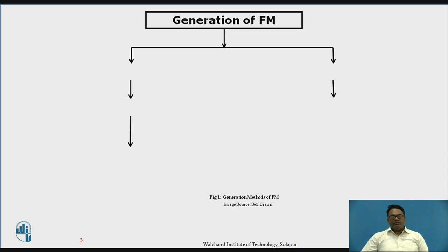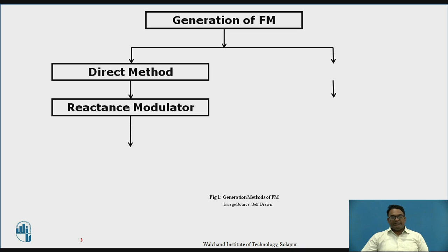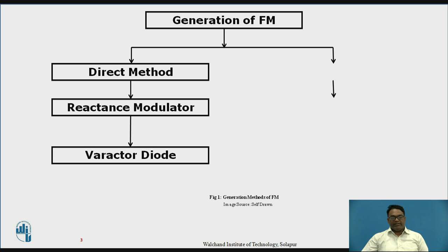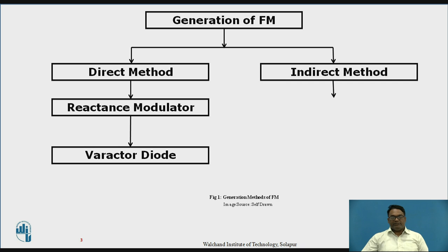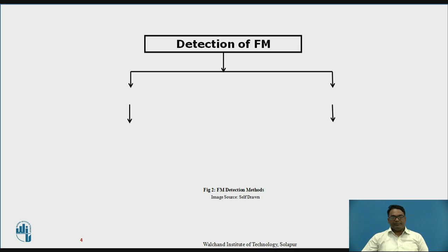So how is an FM signal generated? Generation of FM is done by two different methods. The first is the direct method, which includes the reactance modulator and varactor diode. The second is the indirect method, in which Armstrong's indirect method is used for generation of FM.